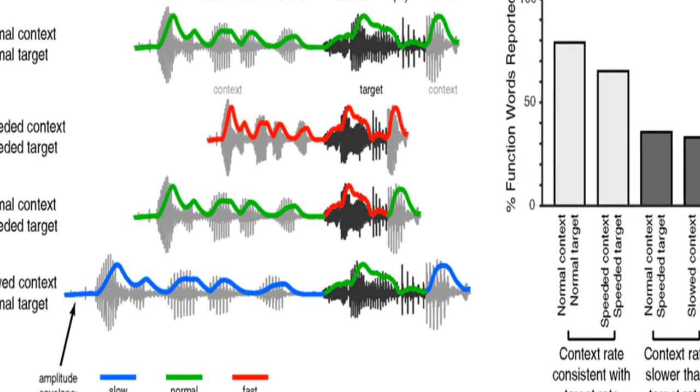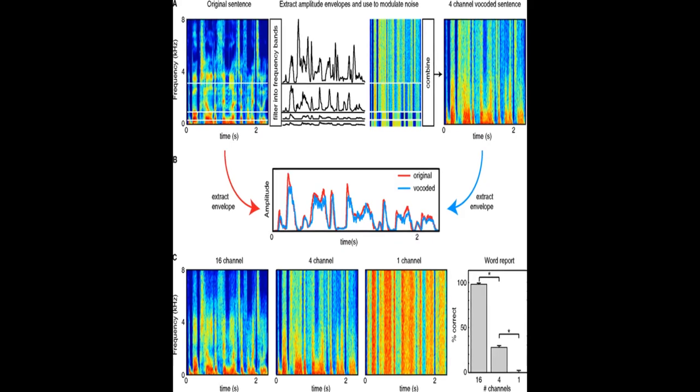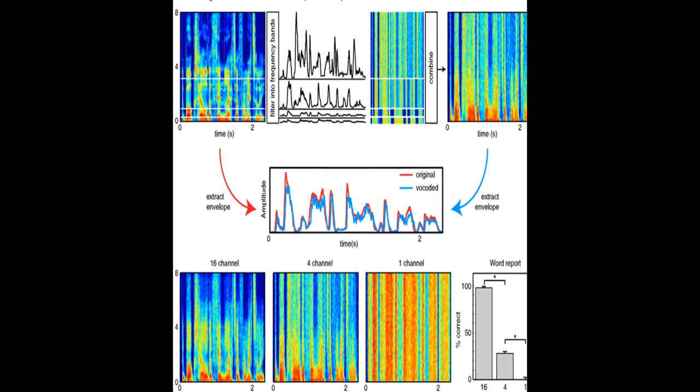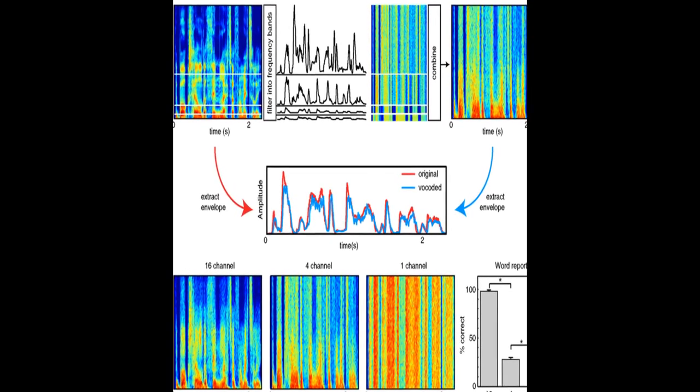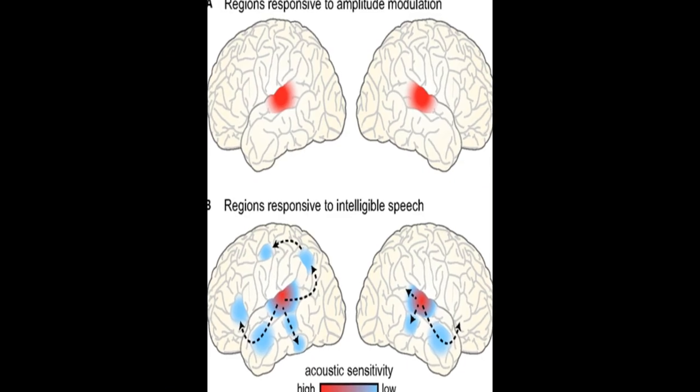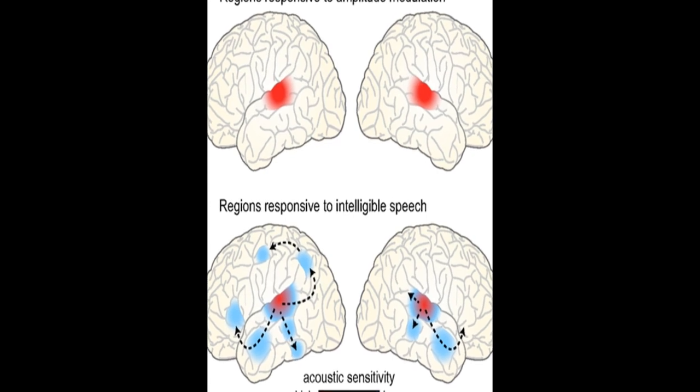It also proposes that lateral anterior temporal cortex functions in a domain-general fashion to support ongoing memory and integration of meaningful input, forming the foundation of a rhythmic hierarchy supporting spoken language.